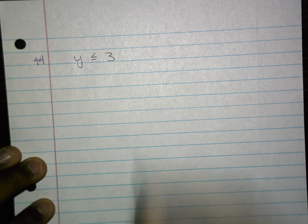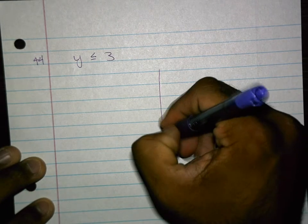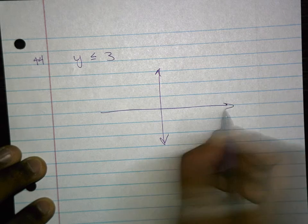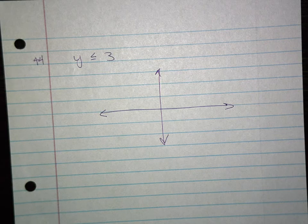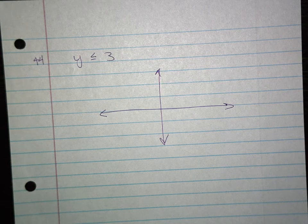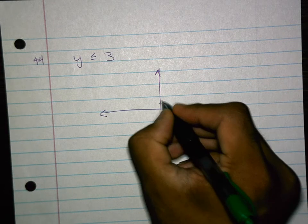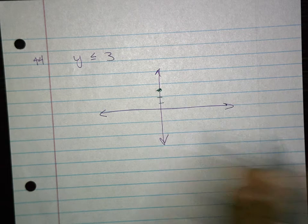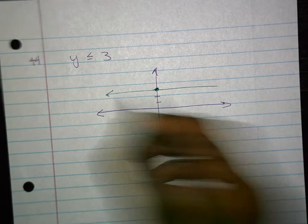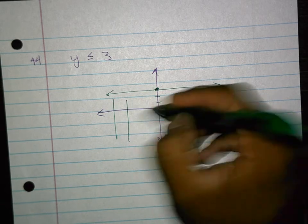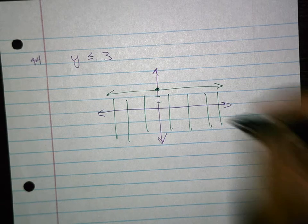44. They want us to graph y is less than or equal to 3. So I'll kind of graph right here. There's my x, y coordinate plane. We're going to cross at y equals 3. This is a solid line because it's or equal to. And then it says that the y's are less than, so you're going to shade everywhere below.